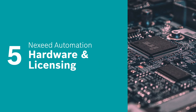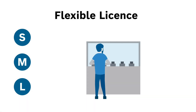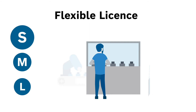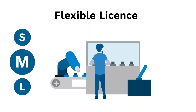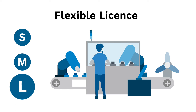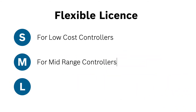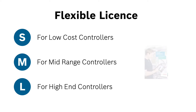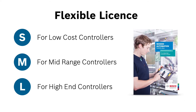Version 2 will offer more flexibility regarding hardware and licensing. The core functionality of Control Plus version 2 will come in three categories: Control Plus S for small projects, M for mid-range projects and L for complex projects. With our new flexible licensing model you will only pay for the performance you get on your controller. Check out our brand new expanded hardware portfolio offering a variety of controllers to fit your needs best.